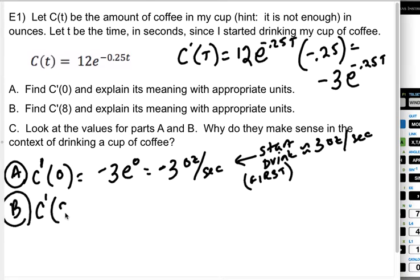Eight seconds in, so C'(8), would be -3e^(-2), which is like -3 over e squared, ounces per second.